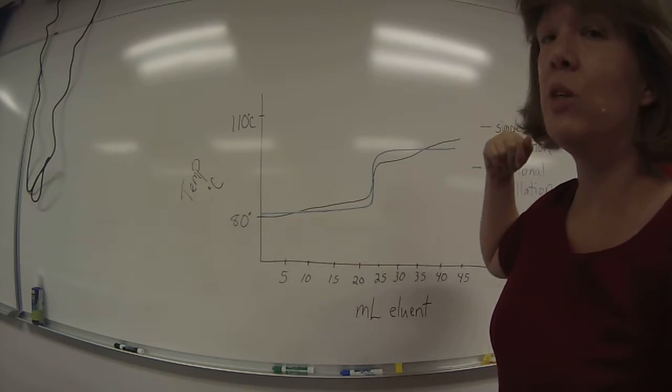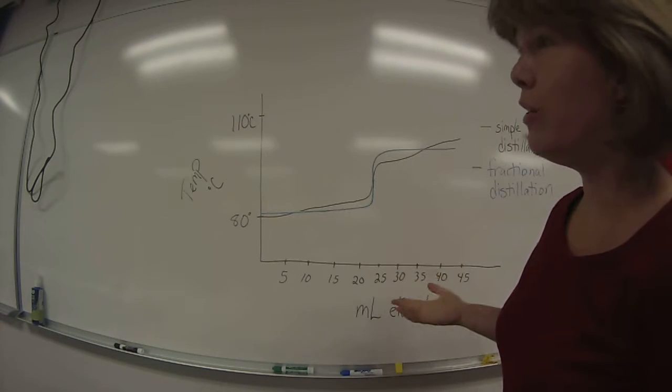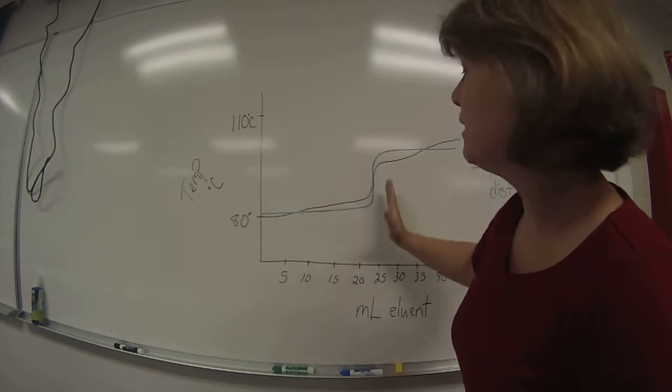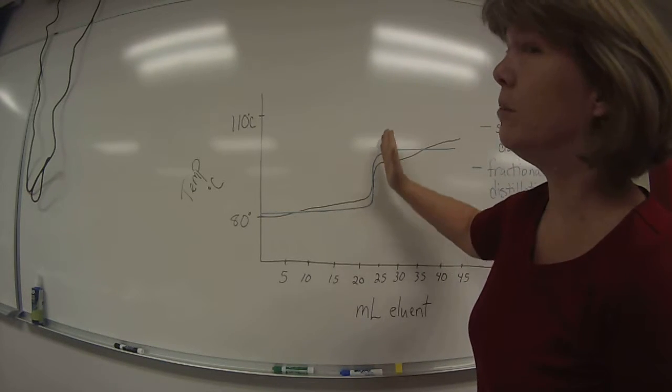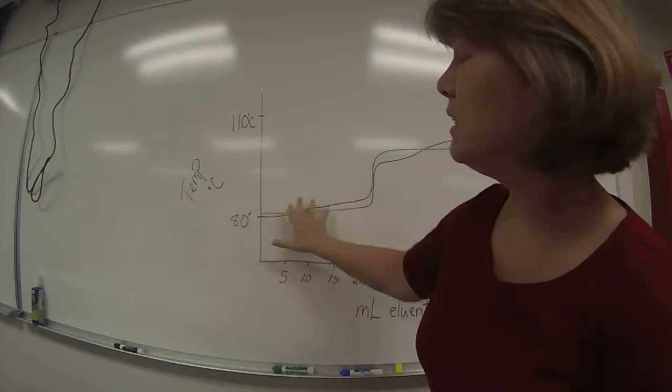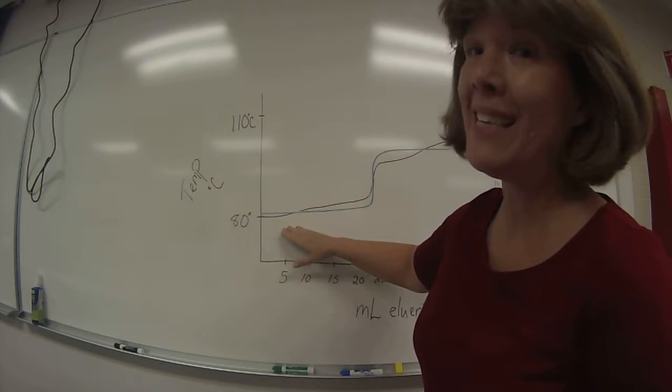So the way that you can tell the difference in efficiency between simple distillation and fractional distillation is by the steepness of this intermediate portion of the graph, because at the beginning of the distillation, you're distilling off mostly the lower boiling component. In this case, it's cyclohexane.